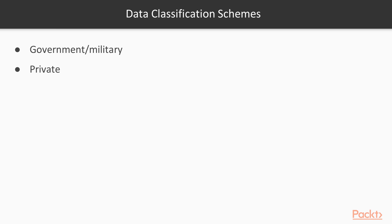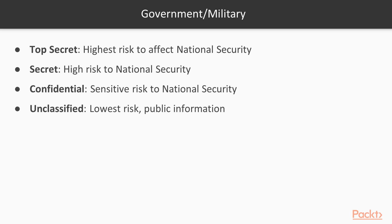Let's take a look at a few different classification schemes. There's the government/military scheme and the private sector scheme. In the government or military scheme, the highest risk — which affects national security — is known as Top Secret. This is information that is very risky; you don't want this data to get out to the public. The next step down is called Secret, which poses a high risk to national security. Below that is Confidential data, which is also a sensitive risk to national security but not quite as much as Secret or Top Secret. Finally, Unclassified is the lowest risk public information, which you can usually obtain through a Freedom of Information Act in the United States.